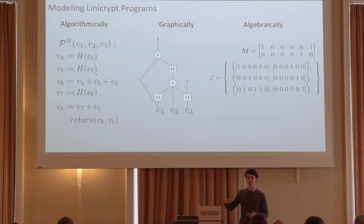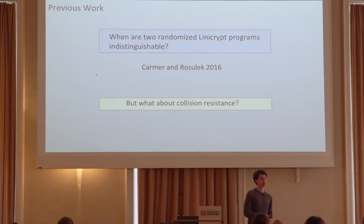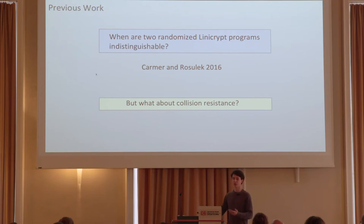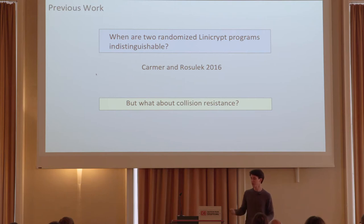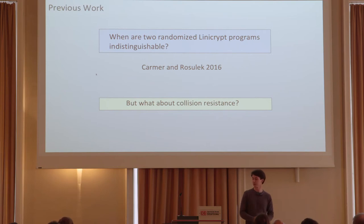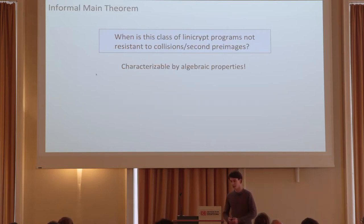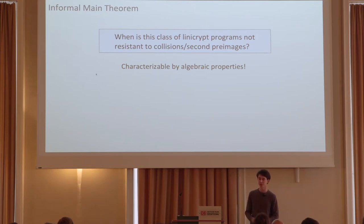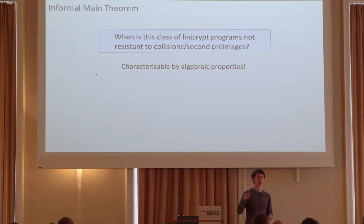Previously, Roselec and Karma's 2016 work looked at when two random lineecrypt programs are indistinguishable in terms of their output. But what about collision resistance or second pre-image resistance for these algorithms? It turns out that both of these properties can be characterized in terms of linear algebraic properties such as span and linear independence.